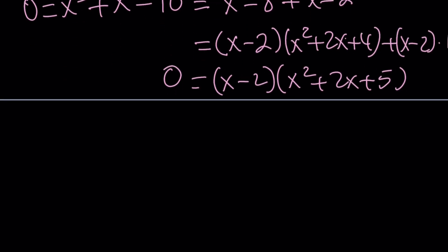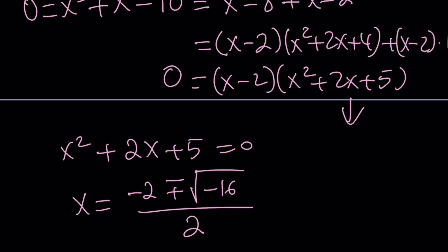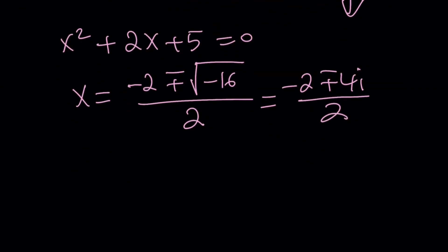And we already know x equals 2 is a solution. So, let's go ahead and focus on the other one. x squared plus 2x plus 5 equals 0. And this has non-real complex solutions. Negative b plus minus the square root of b squared 4 minus 20, which is negative 16. Awesome. That is a negative perfect square. And that can be written as negative 2 plus minus 4i. Because 4i times 4i is 16i squared, which is negative 16.